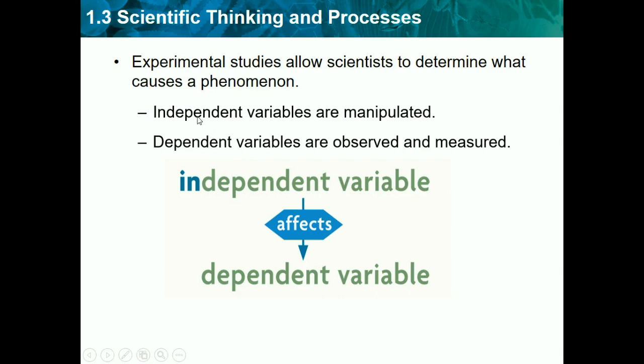Let's do an example using plants. Let's say we're trying to figure out what type of fertilizer affects how high our plant grows. The independent variable is what's manipulated, so that's the type of fertilizer — it can be changed as much as it wants because it's independent. But the dependent variable is what the independent variable is causing, so it's causing the plants to grow different heights, which would be the dependent variable or the outcome.